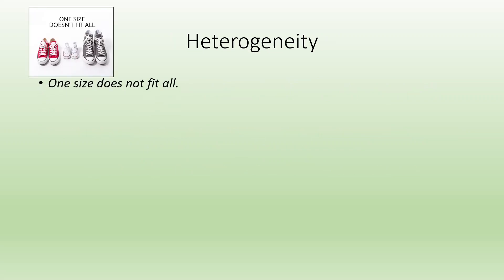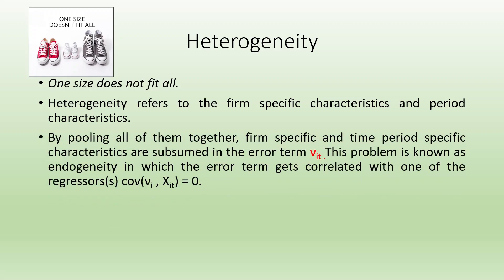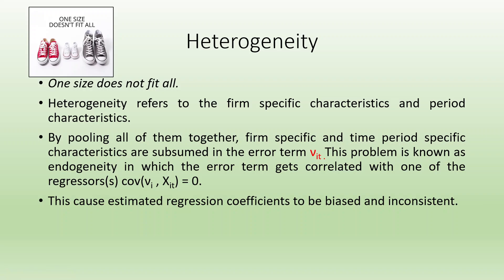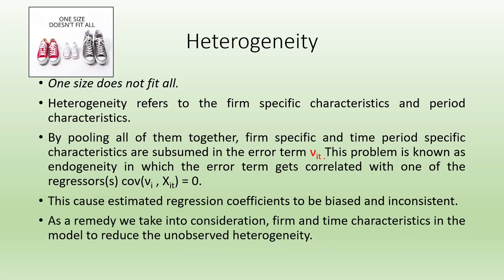Why do we go for this type of analysis? Because if we consider the pooled OLS, we are just generating one regression equation — one size does not fit all. Heterogeneity refers to firm-specific characteristics and period characteristics. By pooling all of them together, these are sub-assumed in the error term V_it. This is known as endogeneity, where error terms get correlated with regressors, causing estimated coefficients to be biased and inconsistent. As a remedy, we include firm and time characteristics in the model to reduce unobserved heterogeneity.